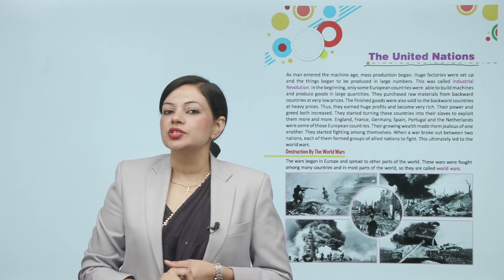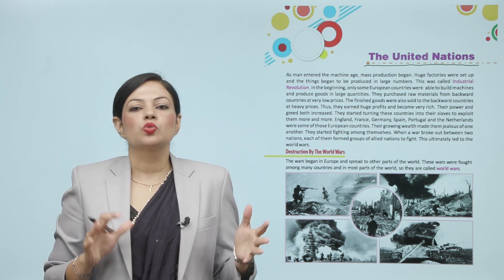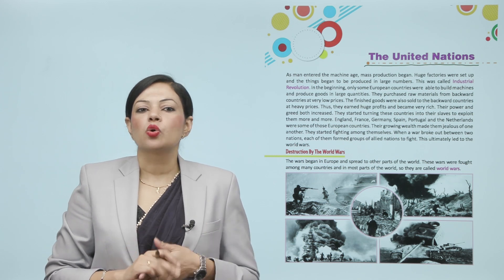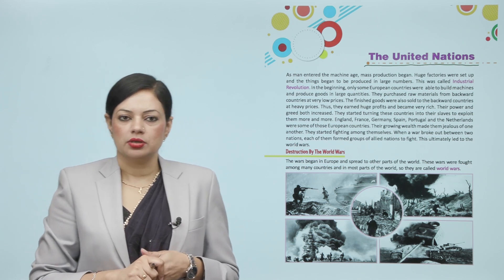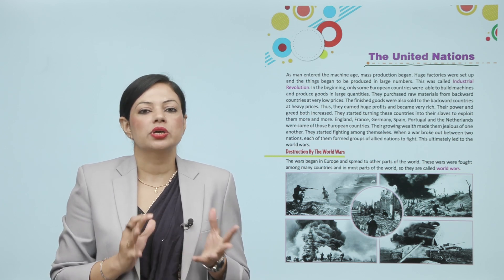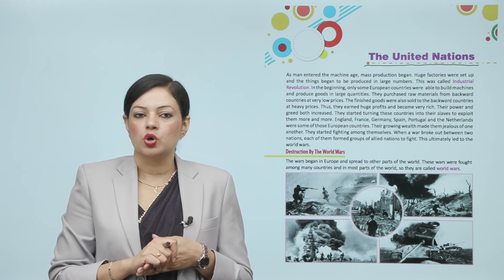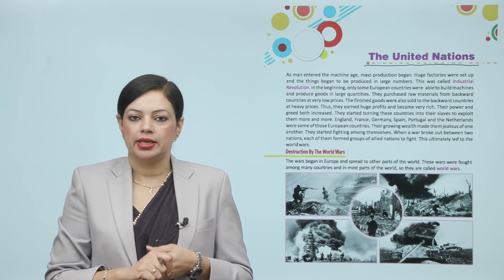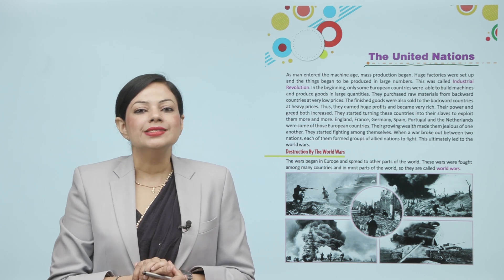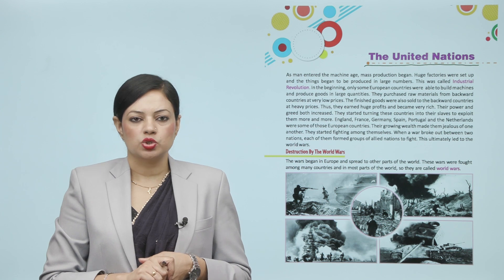As men entered into the machine age, mass production began. Huge factories were set up and things began to be produced in large numbers. This was called the industrial revolution. Only some European countries were able to build machines and produce goods in large quantities.